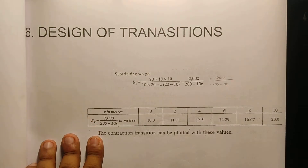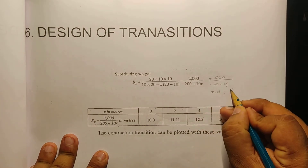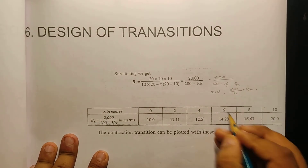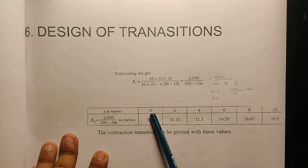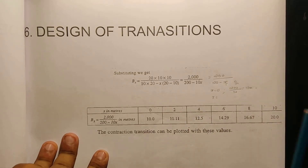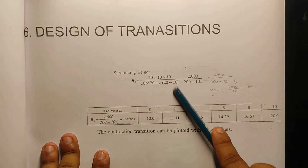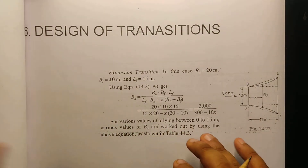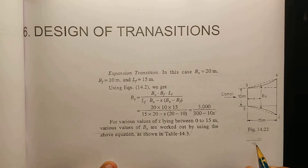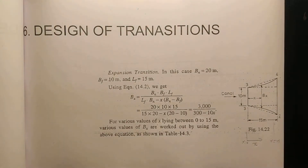So the equation is Bx equals 200 divided by (20 minus x). At x equals 0, Bx equals 200 divided by 20, which is 10 meters. At x equals 10, Bx equals 10 meters. For the expansion of transition, the length of expansion is done similarly to contraction — the significance is that x ranges from 0 to the transition length.